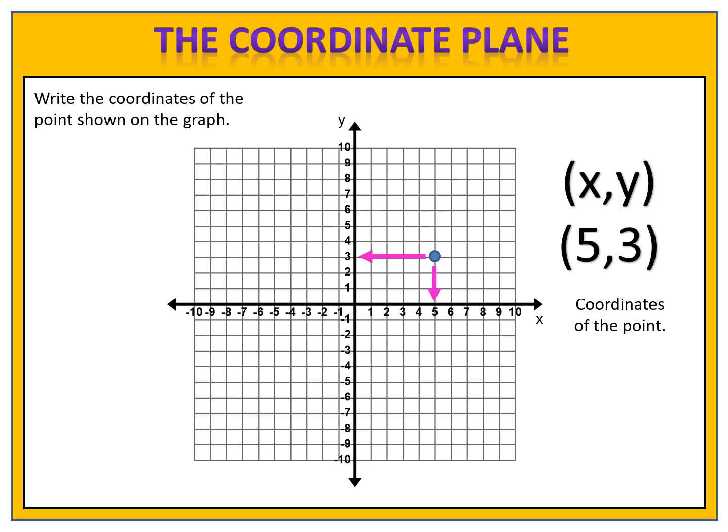This is not to be confused with interval notation, but rather is simply a location on the graph. These are called the coordinates of the point. Anything in the form x comma y is called an ordered pair.